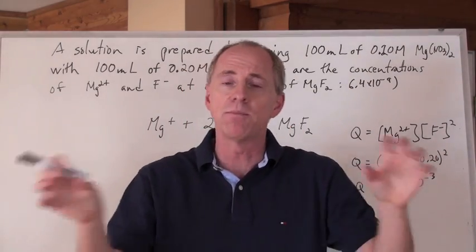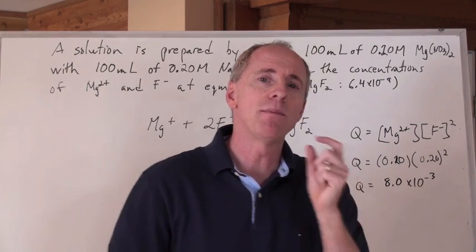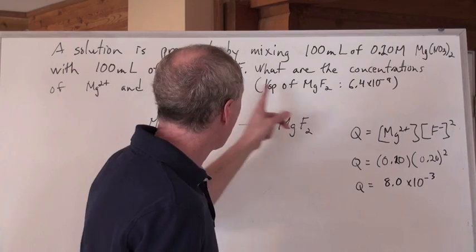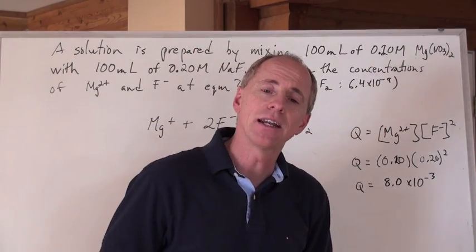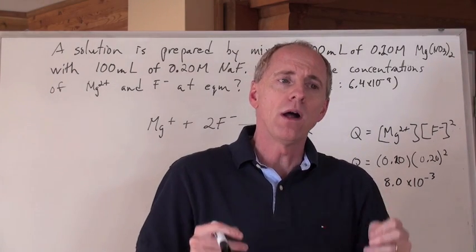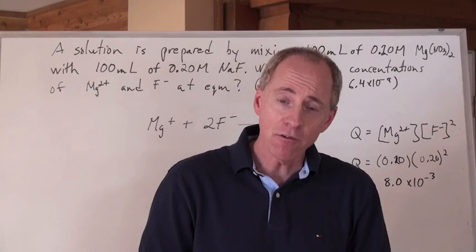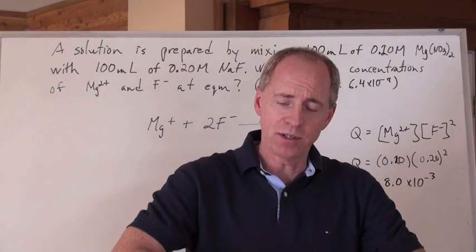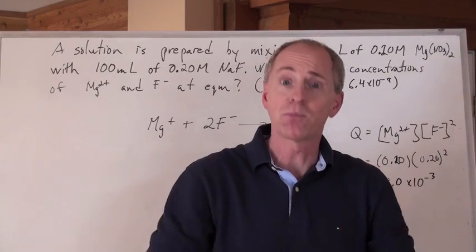So two really soluble compounds — you mix them together, but a reaction could take place between the magnesium ions and fluoride ions in solution. The Ksp of magnesium fluoride is 6.4×10⁻⁹. The question is: could a precipitate of magnesium fluoride actually form? And if it does, how much of the ions do you have remaining in solution?